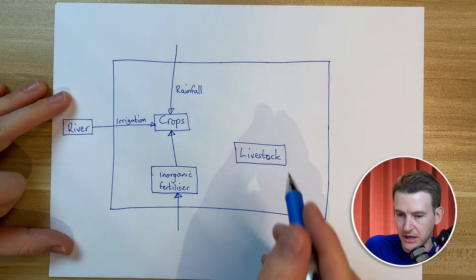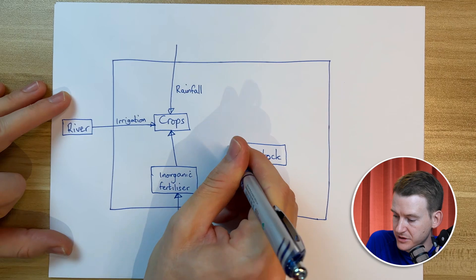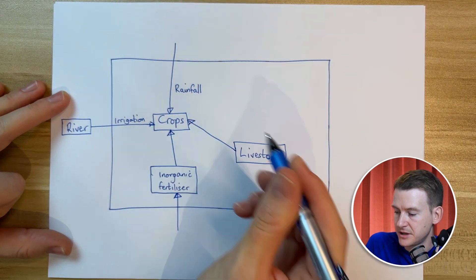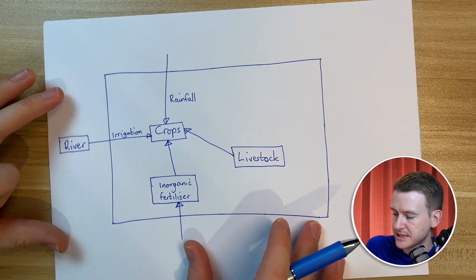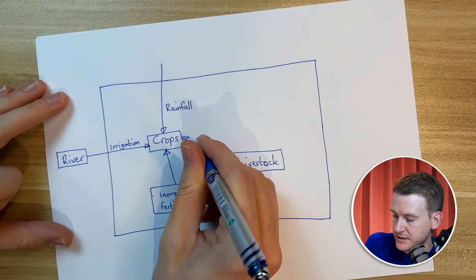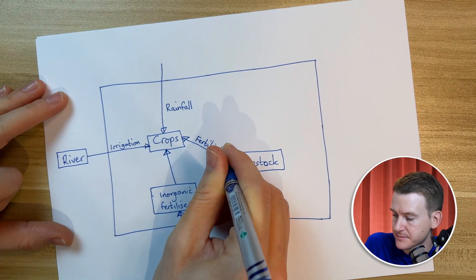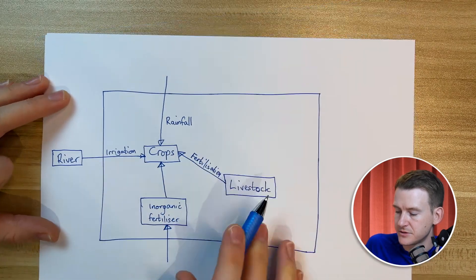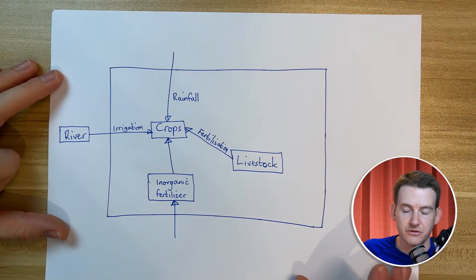Now we've also got livestock here and in this particular farming system, while we've got some inorganic fertilizer, some of the manure from the livestock is also provided. And what we'll do here is label that flow, that is fertilization. So it's clear what's happening there, it's the manure being provided to help fertilize the crops.